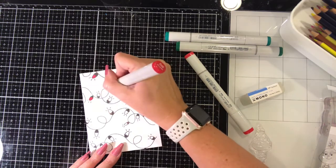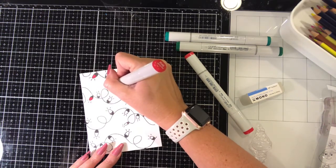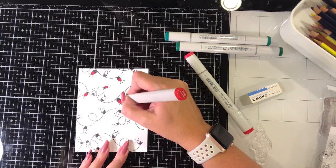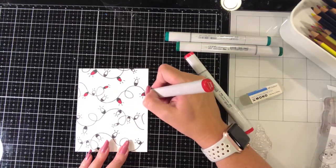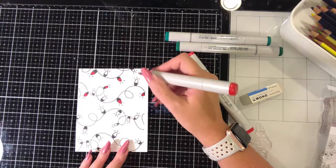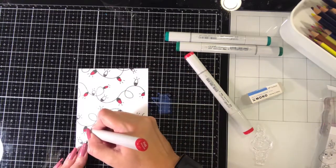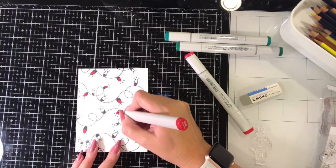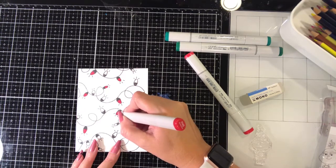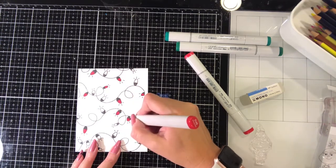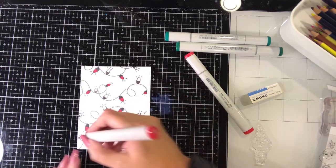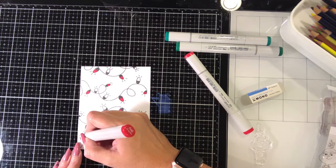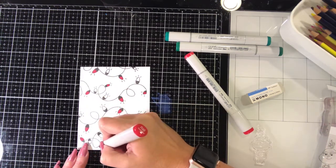So the first one I used was R46, and then I also used G19 for the green color. I'm just very quickly coloring in the light bulbs on all of these. I will go back with the white gel pen and add a little bit of highlights to each of these light bulbs.